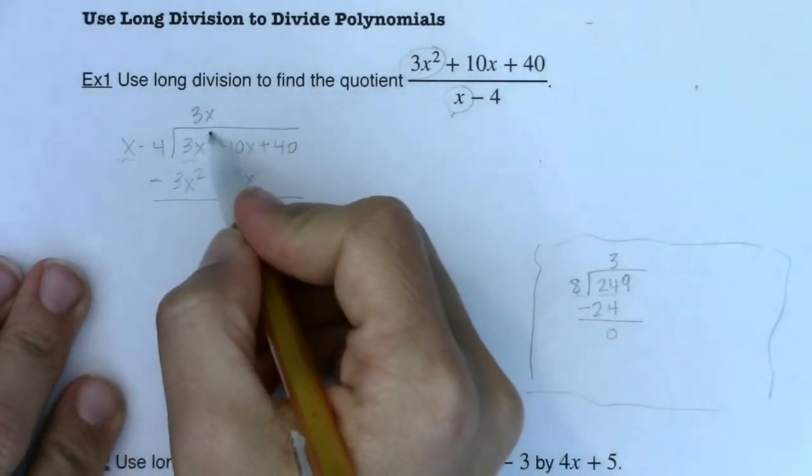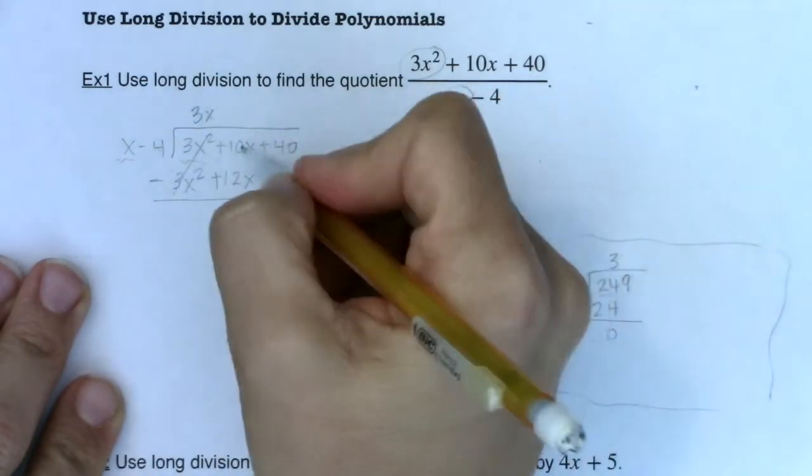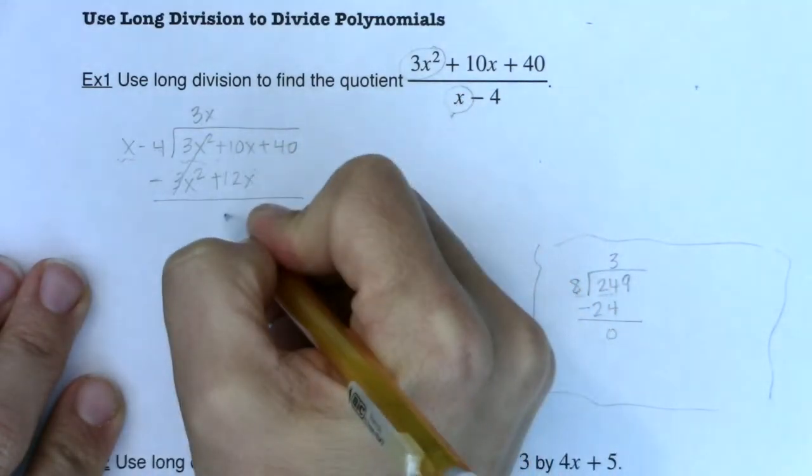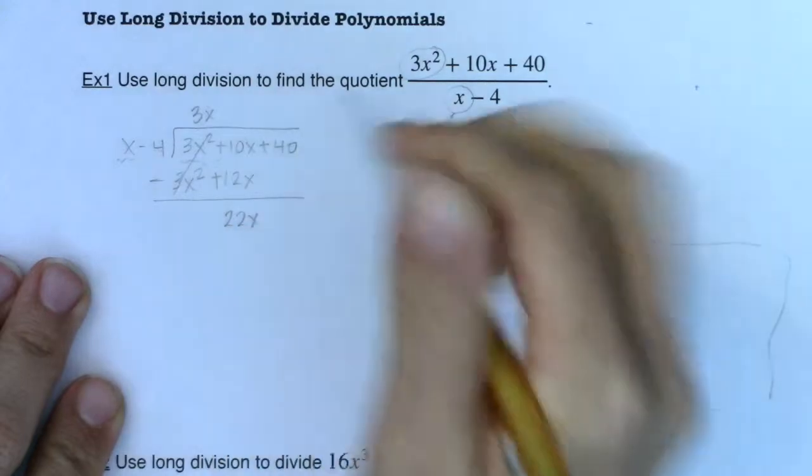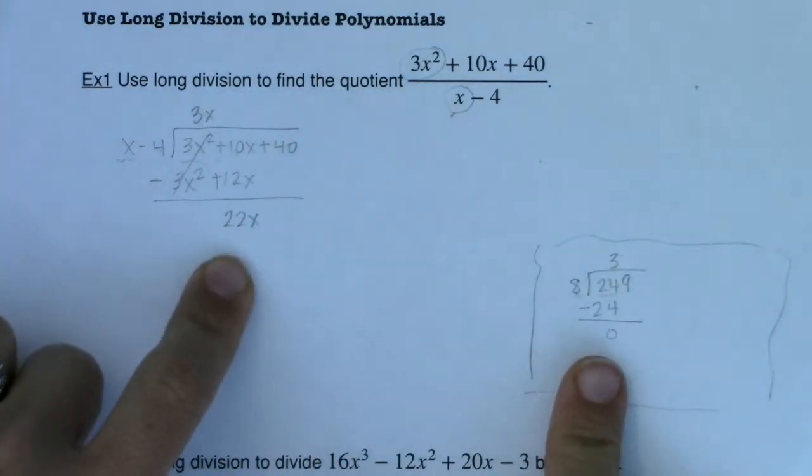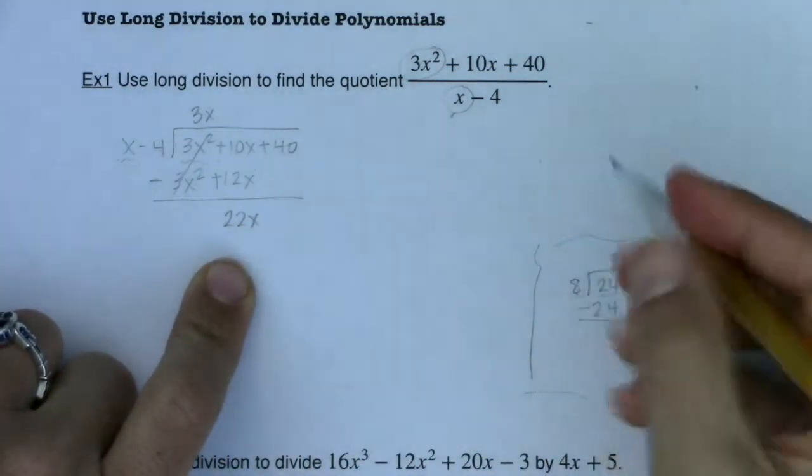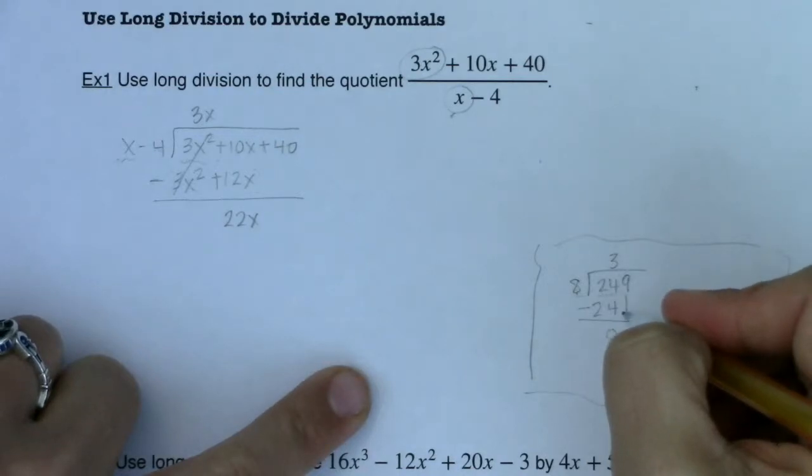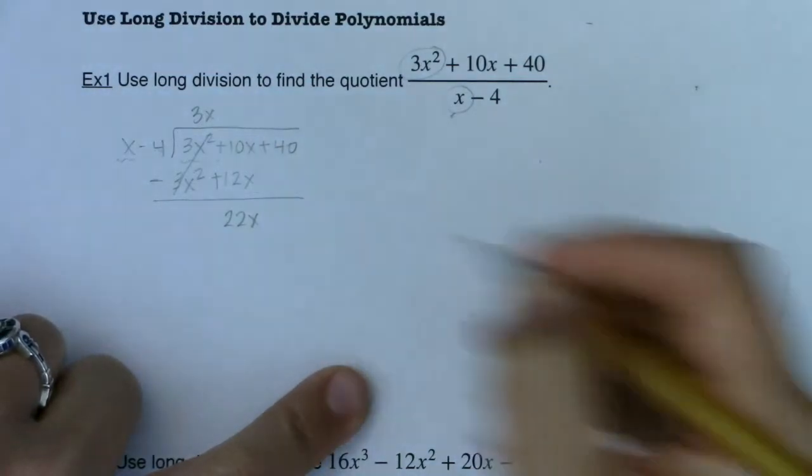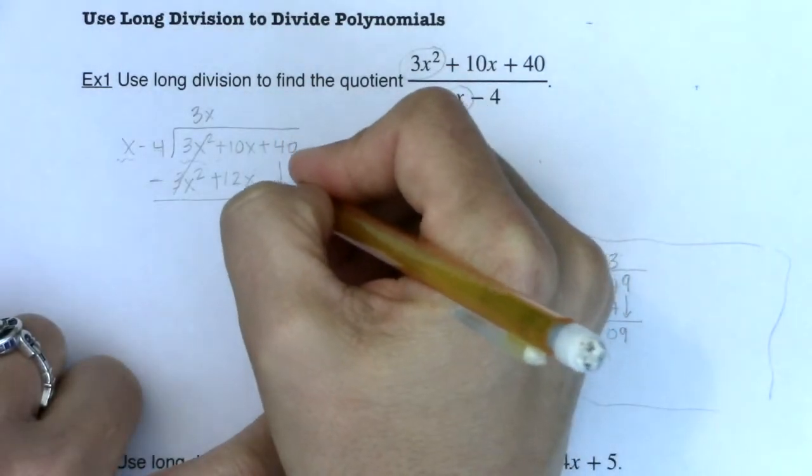Let's do the same thing over here. Now 3x squared minus 3x squared cancels. That's by design. 10x plus 12x is 22x. So I had a zero here and a 22x here, but same idea. What would we do next on this numerical example? We would bring the 9 down. So same deal here. I'm going to bring the plus 40 down.